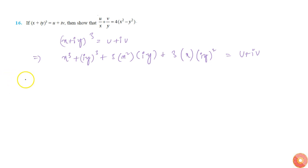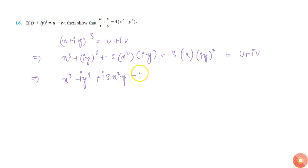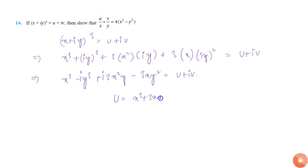Simplifying, this equals x³ − iy³ + 3i·x²y − 3xy² = u + iv. Comparing real and imaginary parts, u = x³ − 3xy² and v = 3x²y − y³.